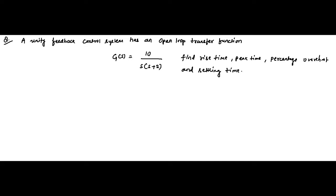Welcome to Engineering Tutorial. We continue our discussion on time response analysis. Here we have a question where a unity feedback control system has an open loop transfer function given, and we have to find out various time response parameters such as rise time, peak time, percentage overshoot, and settling time.